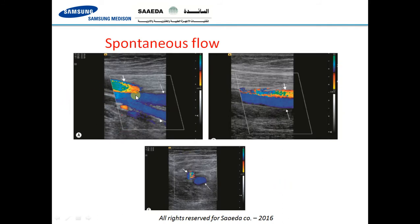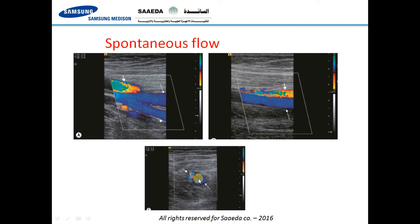In this case, you can see the artery and the vein. There is spontaneous flow in the vein and the color is completely filling the lumen — this is a normal vein with no evidence of venous thrombosis. In axial views, you can see the artery and vein with color homogeneously filling the whole lumen of the vein.